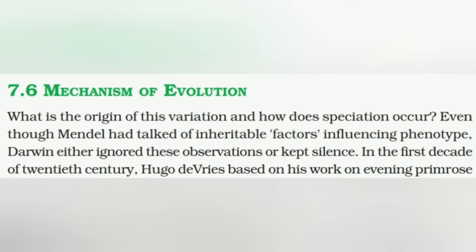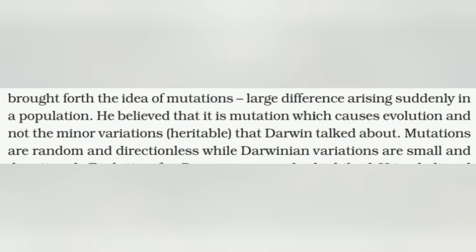The next topic is the mechanism of evolution. How does evolution take place? What is the origin of variation, and how does speciation occur? Even though Mendel had talked of inheritable factors influencing phenotype, Darwin either ignored these observations or kept silence. In the first decade of the 20th century, Hugo de Vries, based on his work on evening primrose, brought forth the idea of mutation — large differences arising suddenly in a population.